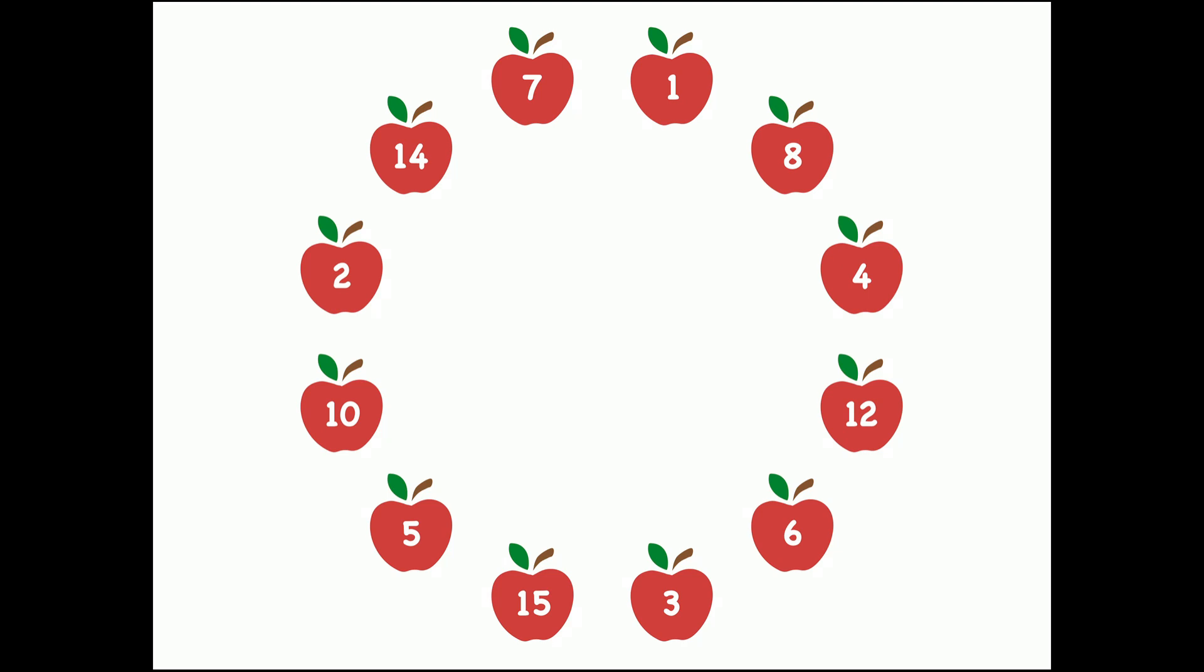If you see that two apples are neighboring on the perimeter here, for example 4 and 8, well then you know that one of them is a multiple of another. 8 is a multiple of 4.